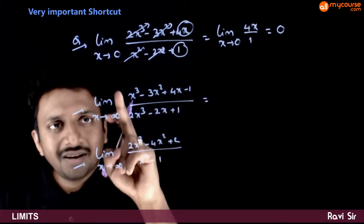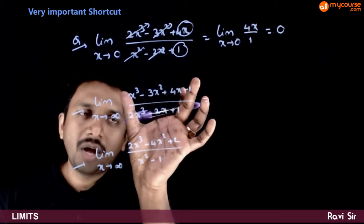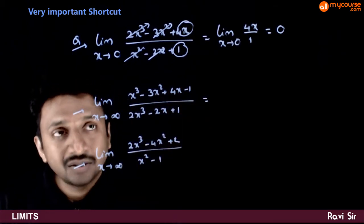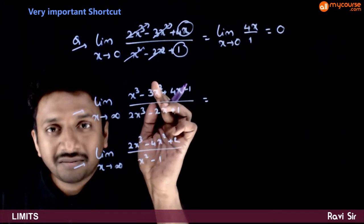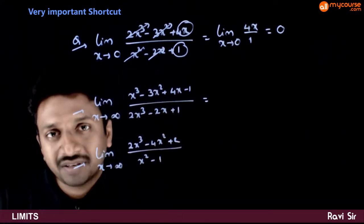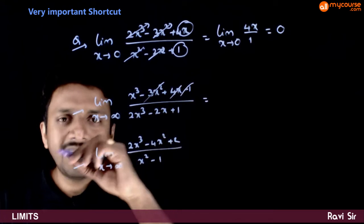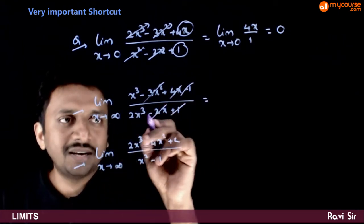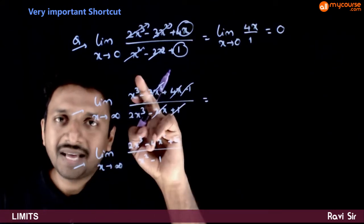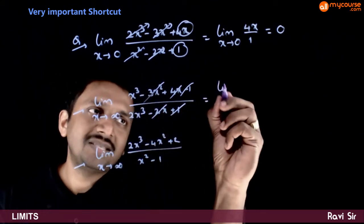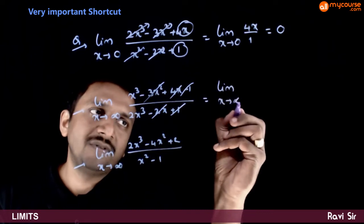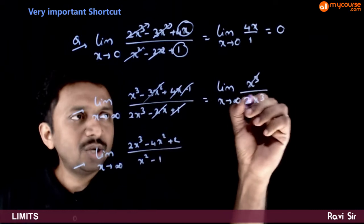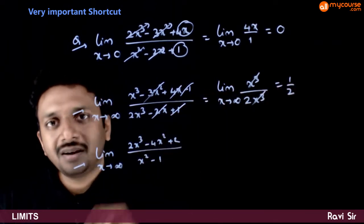Next, consider limit x tends to infinity of a polynomial by polynomial. To quickly find this limit, in the numerator take only the highest power of x and neglect the remaining; in the denominator also take the highest power of x and neglect the remaining. We get x³ / 2x³. The x³ terms cancel, giving the answer 1/2.